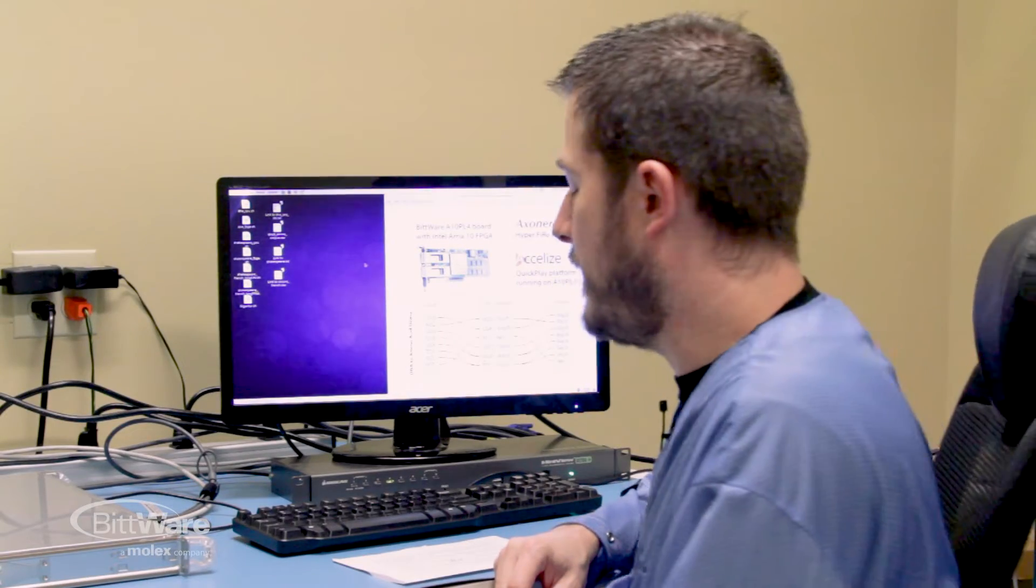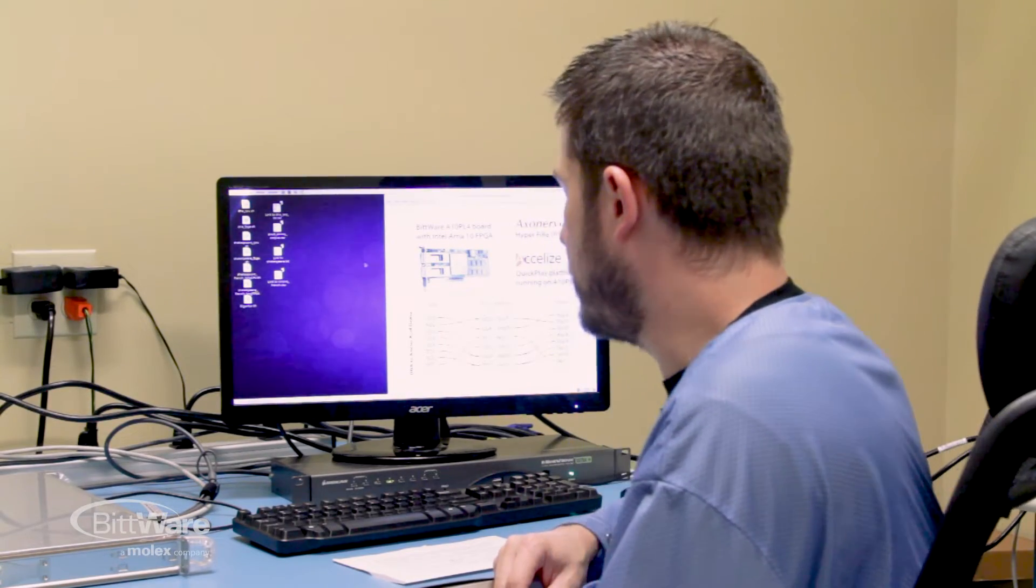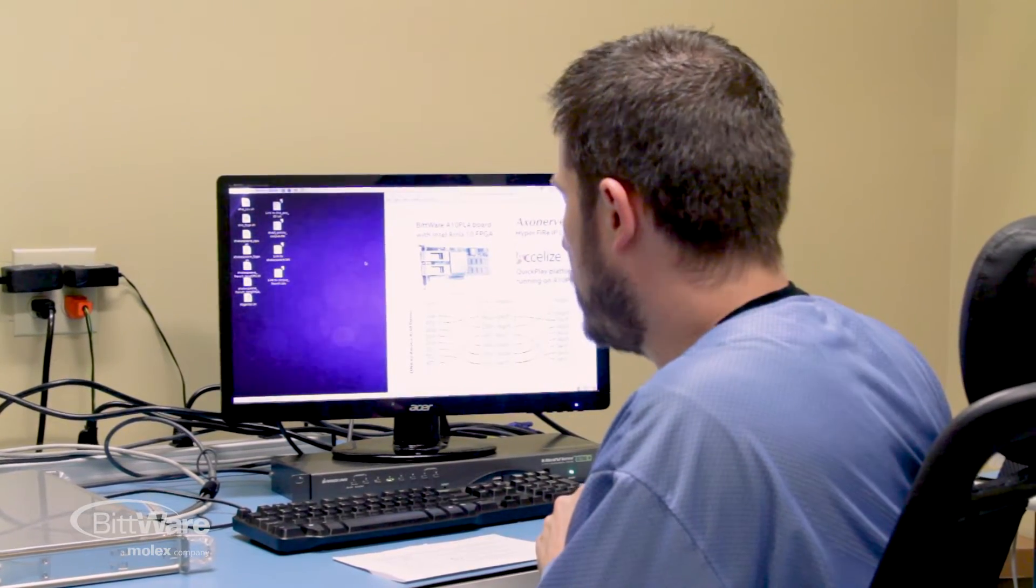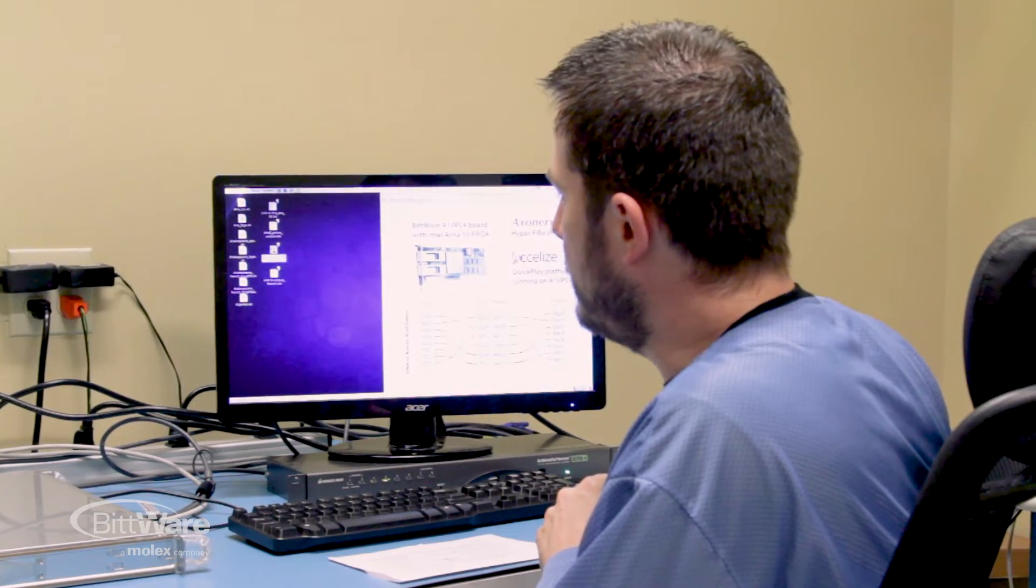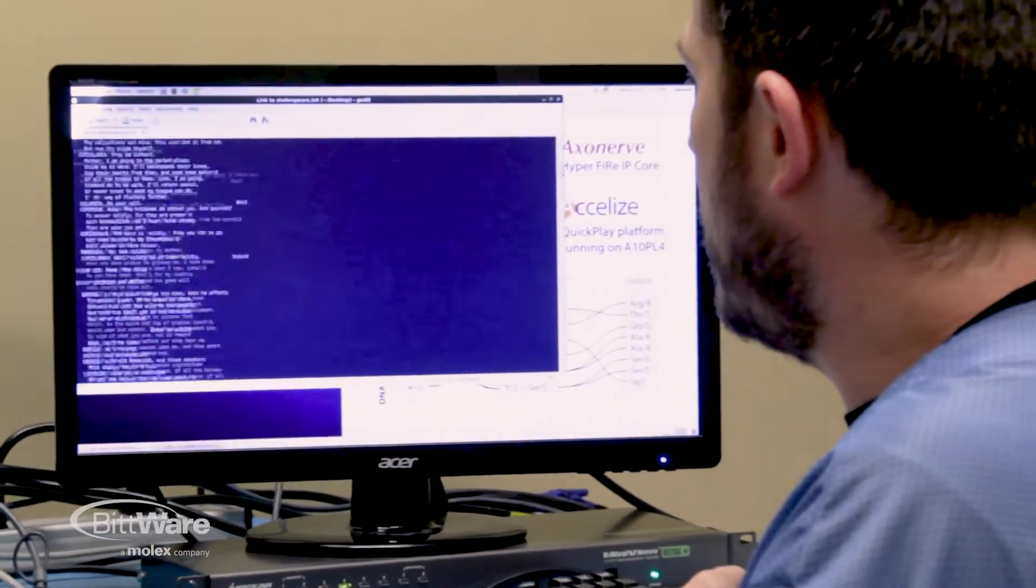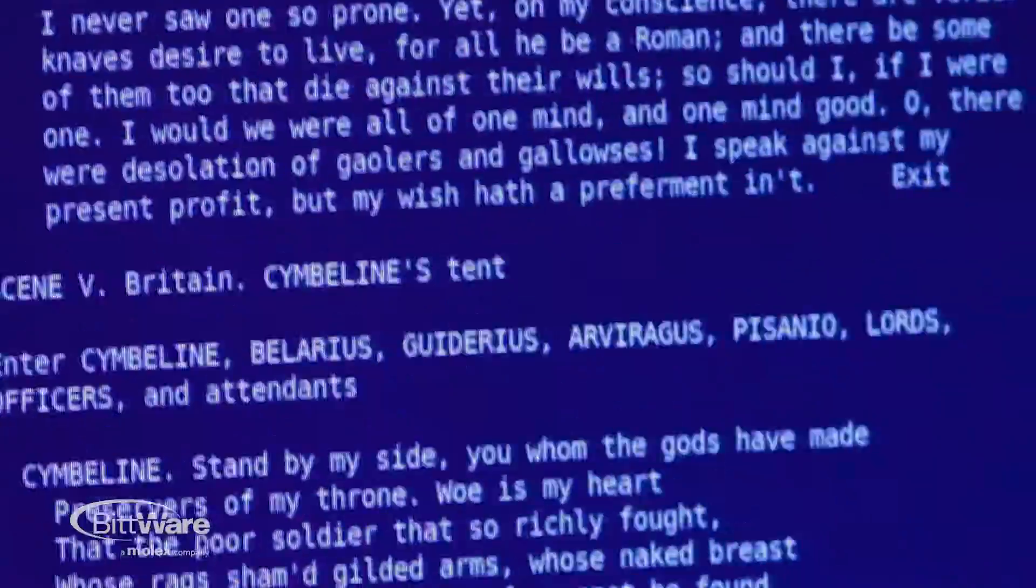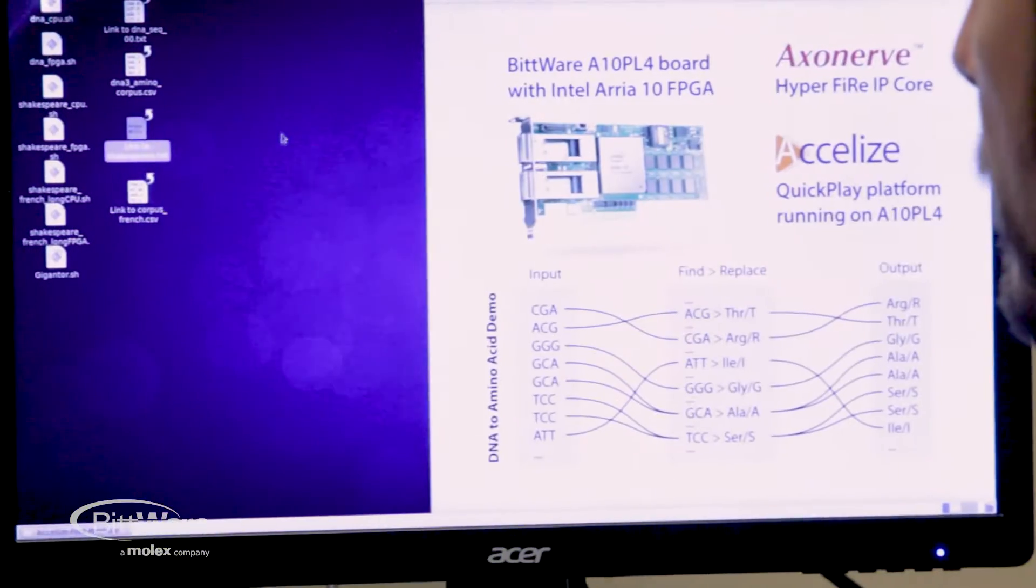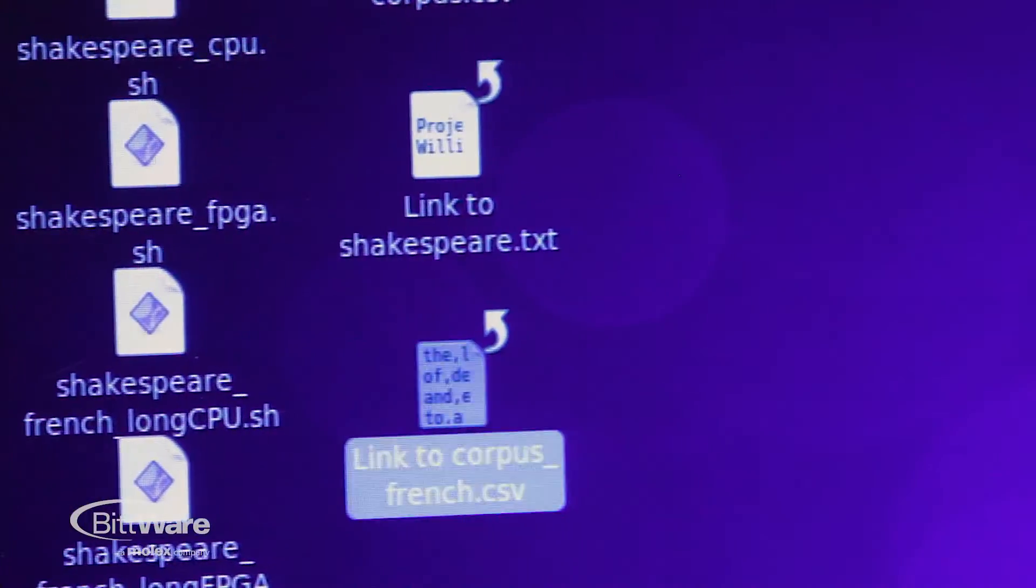So now let's change the dataset and find-and-replace to see a little bit more of how this works. So in this demo, I have a text file with the complete works of Shakespeare. So this is about a 5 megabyte file, complete works of Shakespeare.